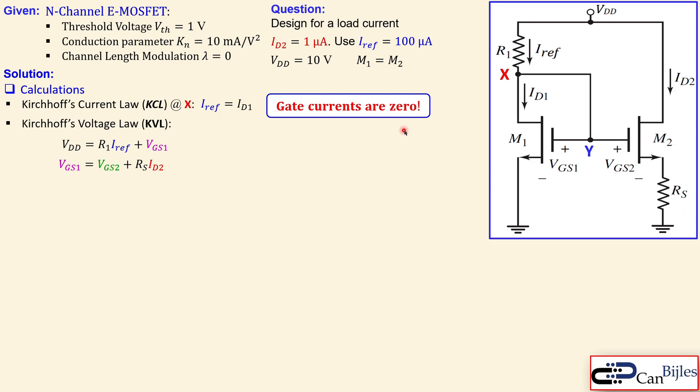So we can now take these two equations together and then form one equation, like VDD is equal to R1 times Iref plus the VGS1, which is then these two terms, which is shown here.